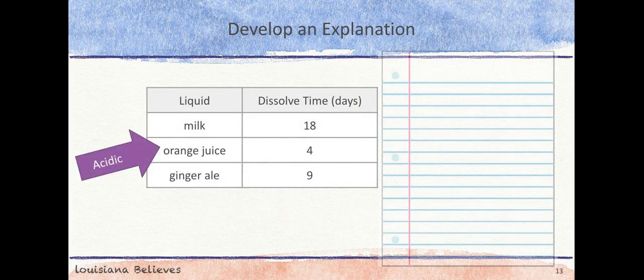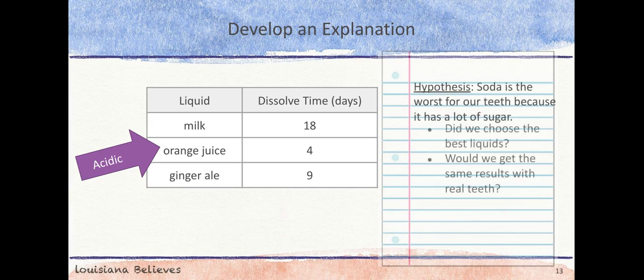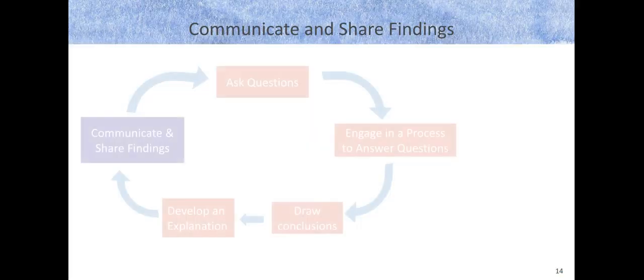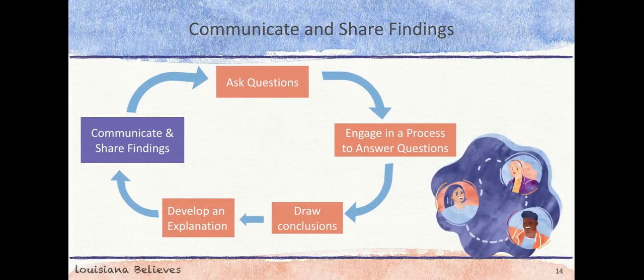These results often can lead scientists to new questions. For example, did we choose the best liquids or would we get the same results with real teeth? Scientists communicate with each other in order to share their findings, compare results, and improve methods in order to be as accurate and effective as possible. Once the inquiry process is completed, it begins again with new questions.